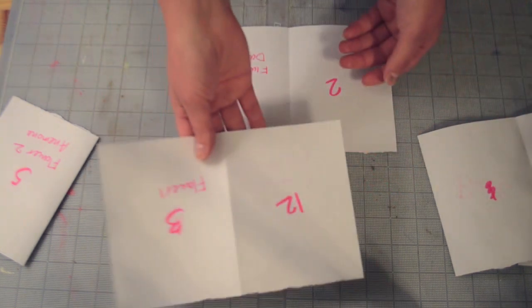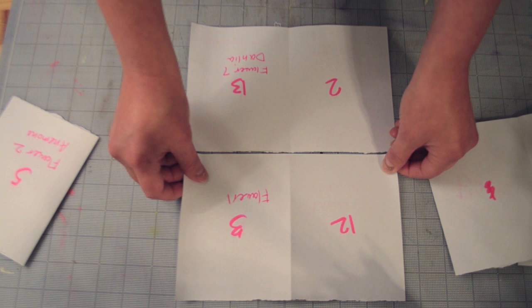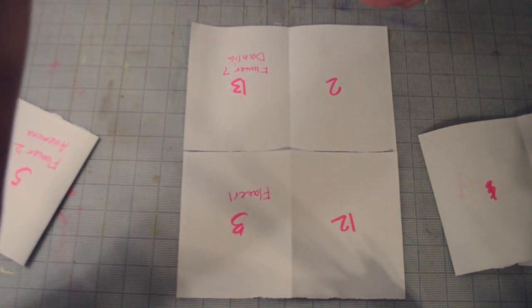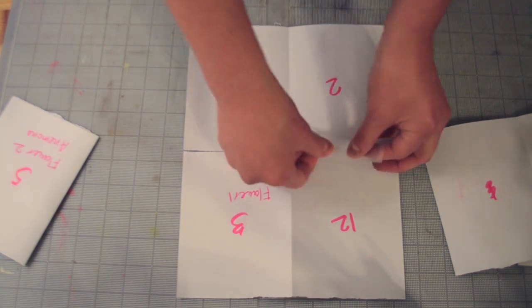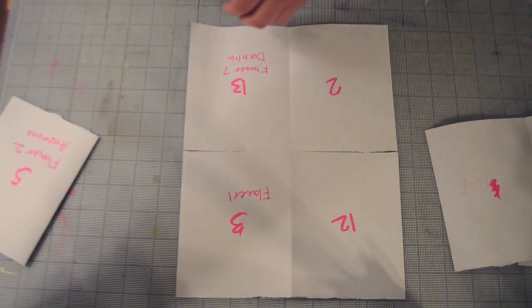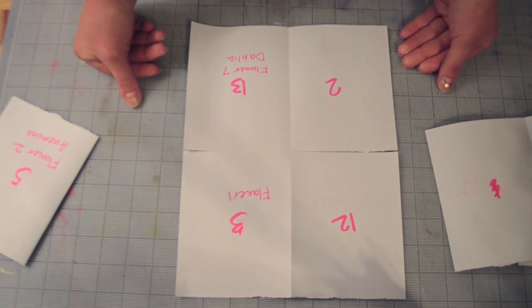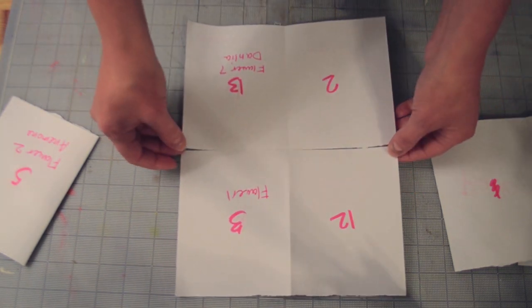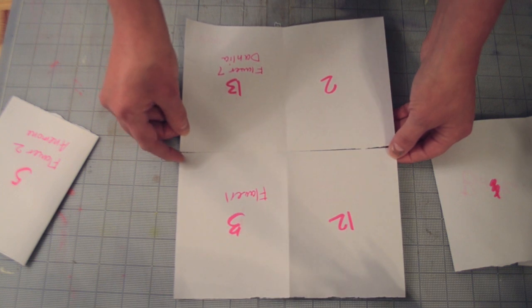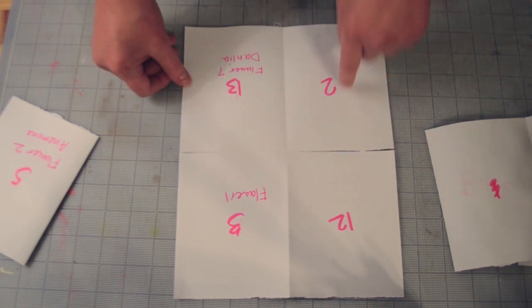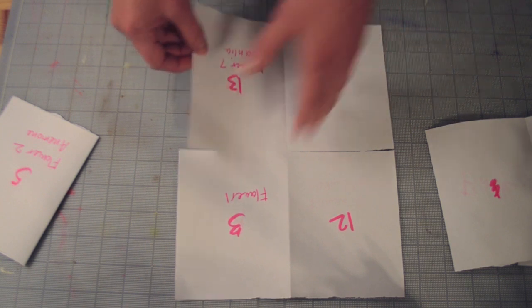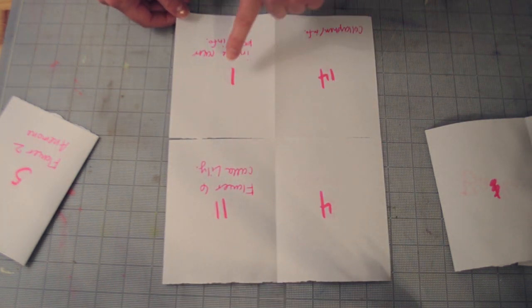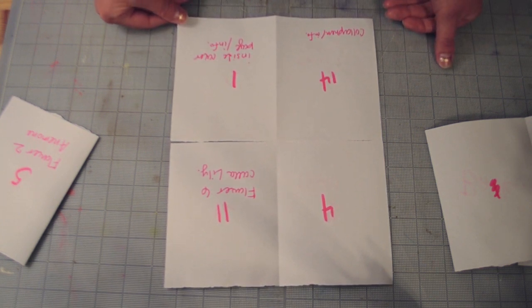Since I'm doing the half sheet, I could even stick these together so that I know that when I'm laying them out to print on a full sheet that I want pages 12, 3, 2, and 13 to be on one side of the page. And page 4, 11, 14, and 1 to be on the other side of the page.